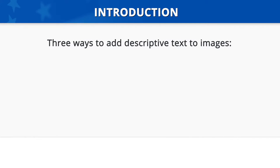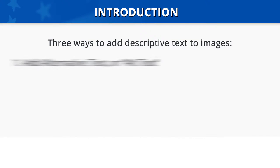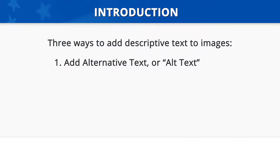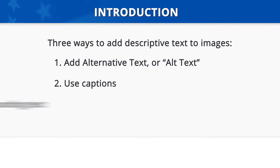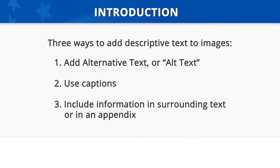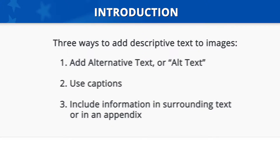There are three ways to add descriptive text to images and other objects. One, add alternative text or alt text. Two, use captions. Or three, include information in surrounding text or in an appendix.